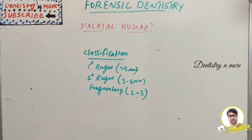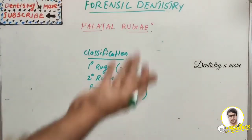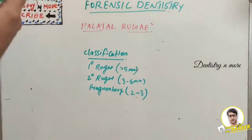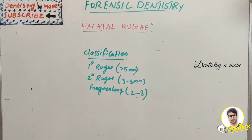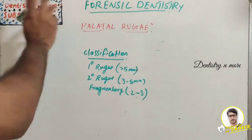Now we have the role of palatal rugae in person identification. More than age estimation, the palatal rugae pattern is used in person identification in crime scenes or mass disasters. Upcoming sessions will cover the role of third molars in dental age estimation, the use of dental DNA in forensic dentistry, and the histological method — all very important topics for the exam, as compulsory questions will come from forensic dentistry.